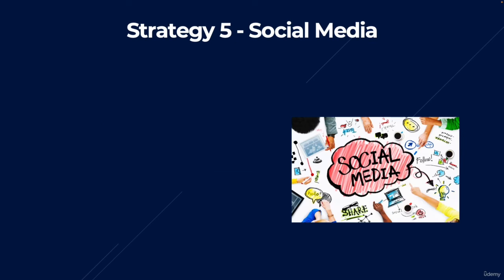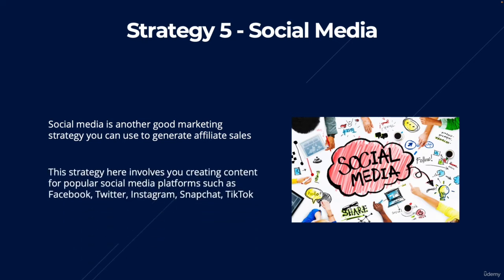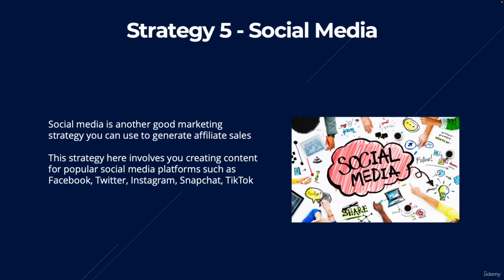Moving on to strategy five, which is social media. Social media is another good marketing strategy to generate affiliate sales. The strategy involves creating content for popular platforms such as Facebook, Twitter, Instagram, Snapchat, and TikTok — reviewing a product, telling people how great it is, and telling them to swipe up or click the link to buy. In that description or swipe-up, you plug your affiliate link, which is how you generate affiliate sales.